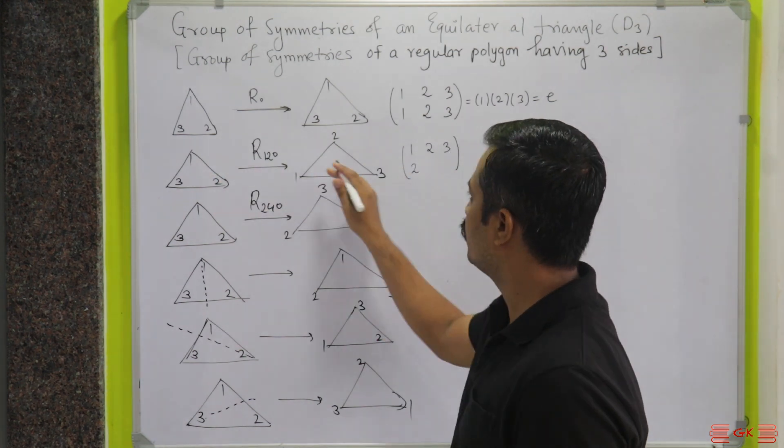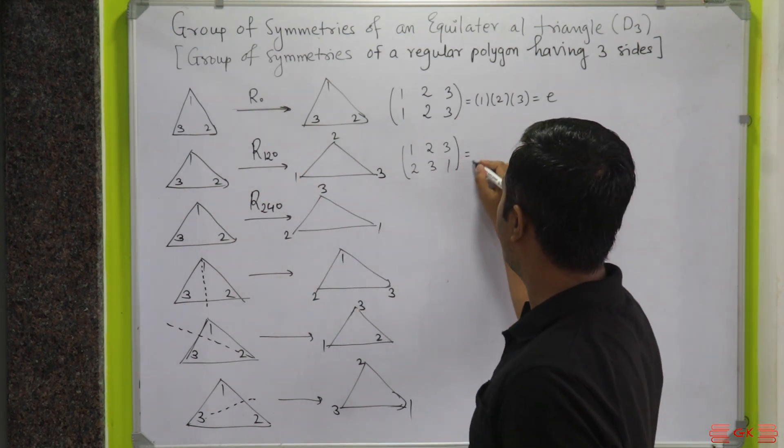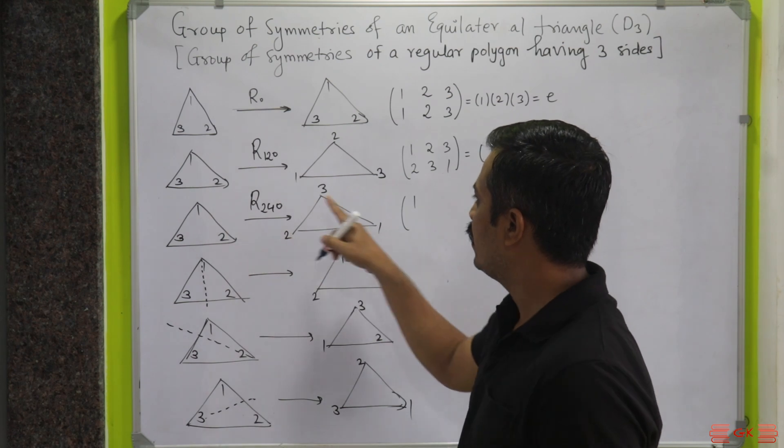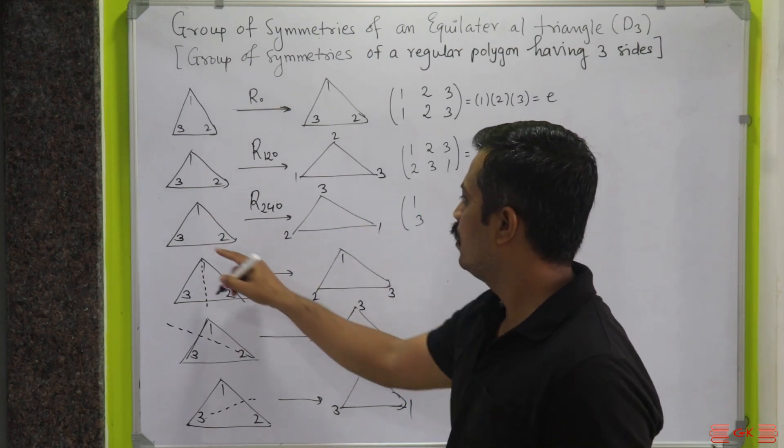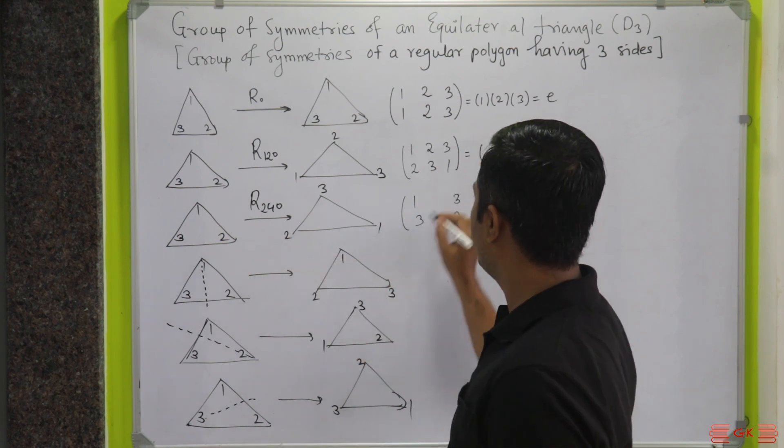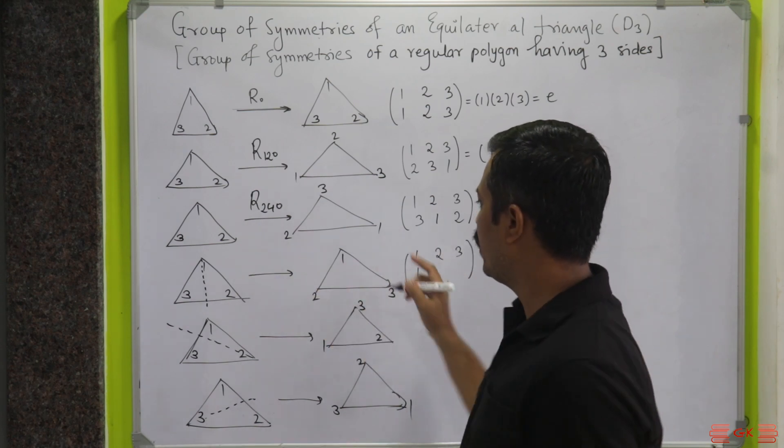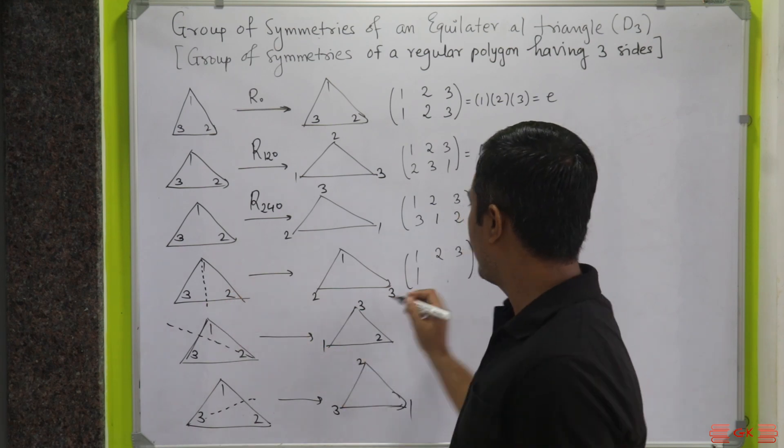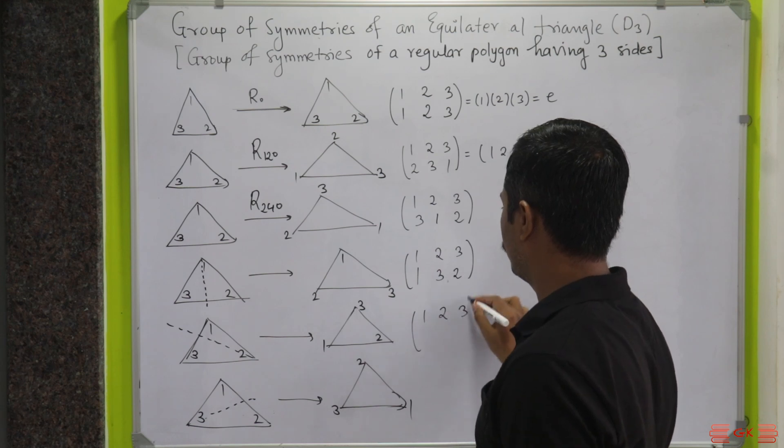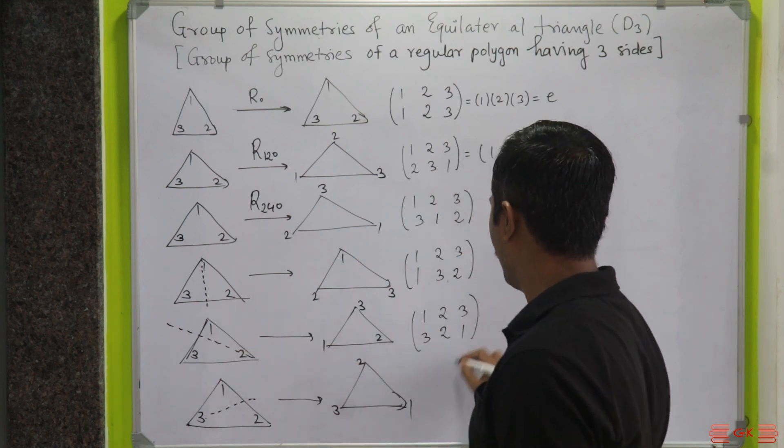Here as well, we will get one more permutation. One maps to two, then this two maps to three, then this three maps to one. In the cyclic form, it is actually (1,2,3). For this one, one is mapping to three, three is mapping to two, and two is mapping to one.